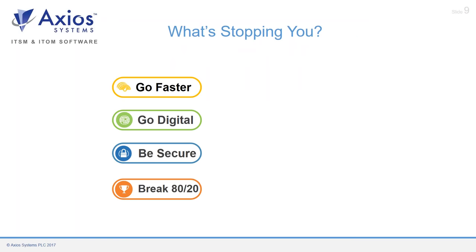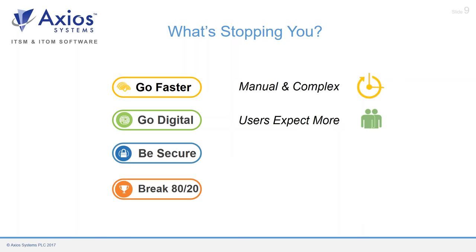If we frame these challenges within the context of SAM, what does it mean for you? You can't go faster with manual software deployments and growing complexity of operating systems. The challenge of going digital means you need proper tools and processes, otherwise you'll miss users' expectations. End users expect an Amazon-type shopping experience — they go to a self-service portal, request the software they need, and it's automated and delivered the same or next day. We also need to balance this by ensuring software is approved and devices are secured. If you don't know what's out there, you can't secure it.